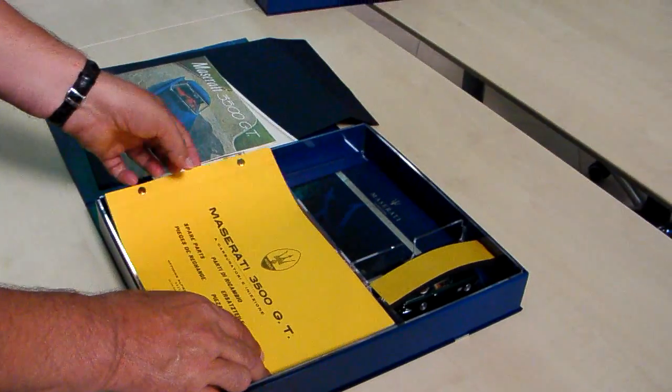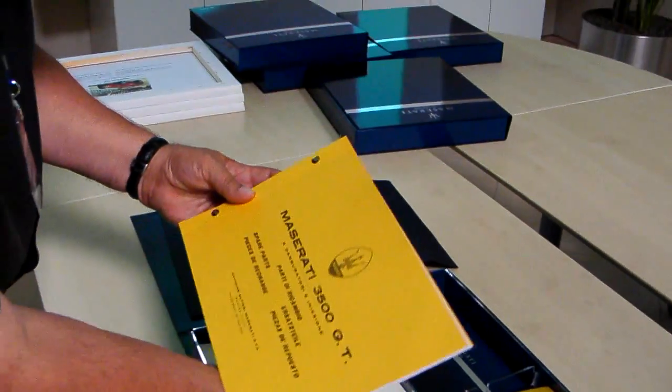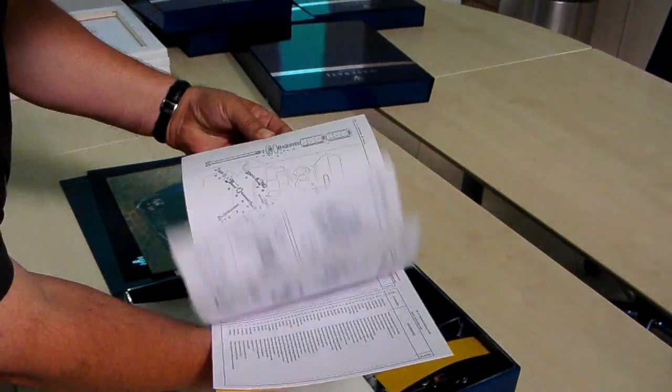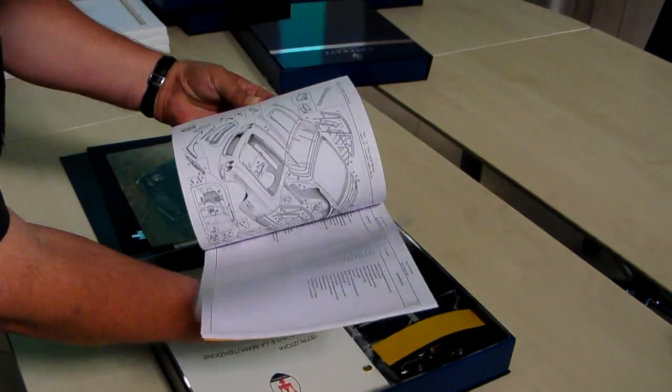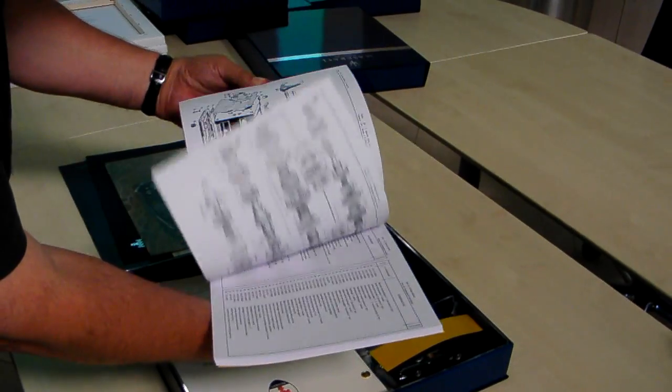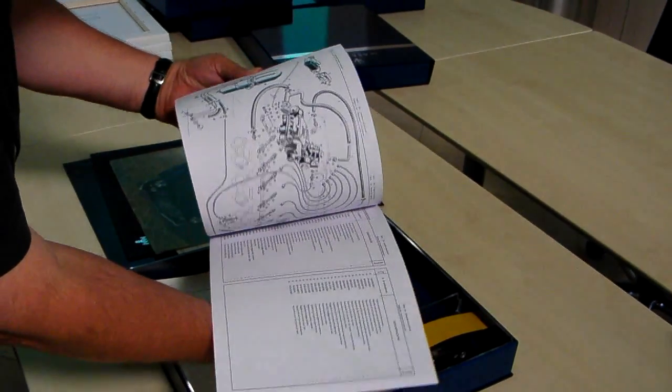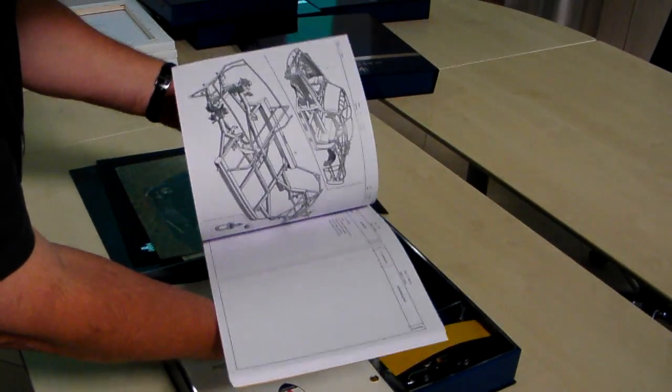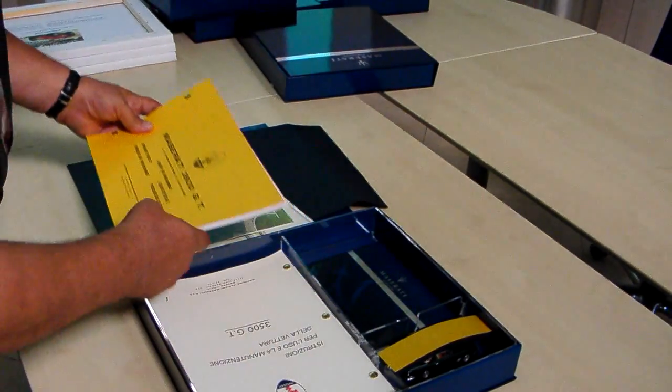Now, also as part of this kit is a very well done Maserati parts book that shows all the schematics and all the pages, and it's done to a very high standard. Again, it's not a reproduction. If it's produced by Maserati, it's an official document. So there's that, and very impressive.